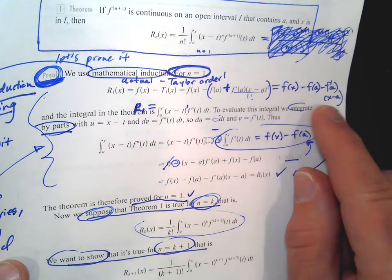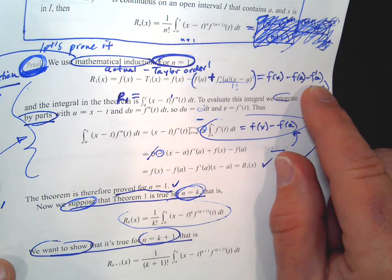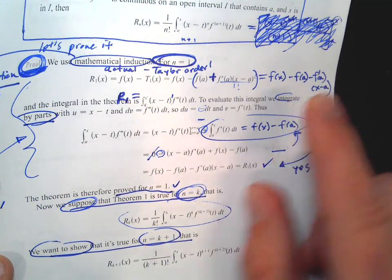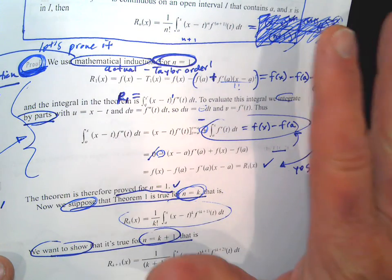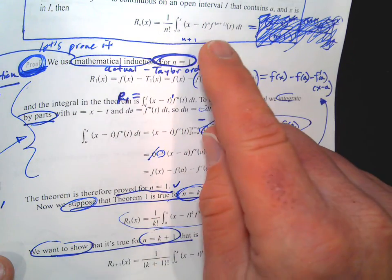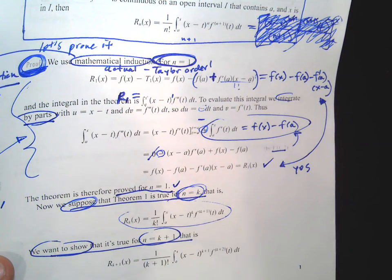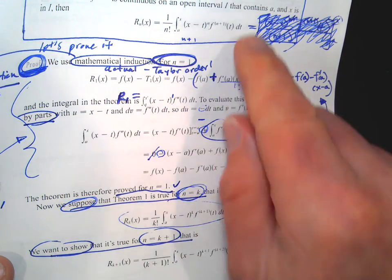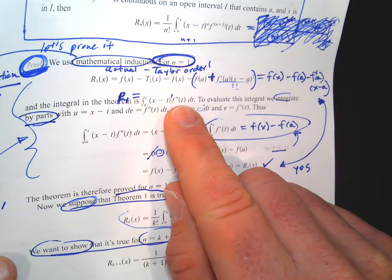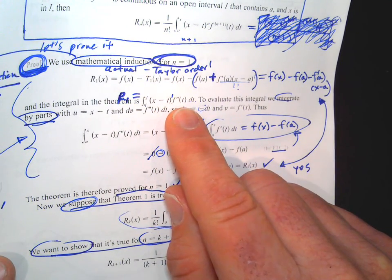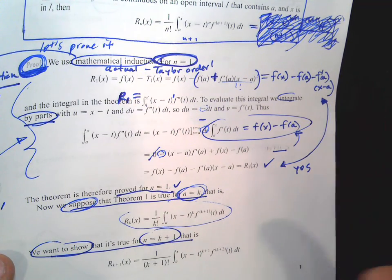We distribute the subtraction and get this expression. Now we're going to take the integral from the theorem — just the integral part, not including the factorial. If we're going to integrate this, we need to use integration by parts. That's kind of cool — that's one of those things from this year.